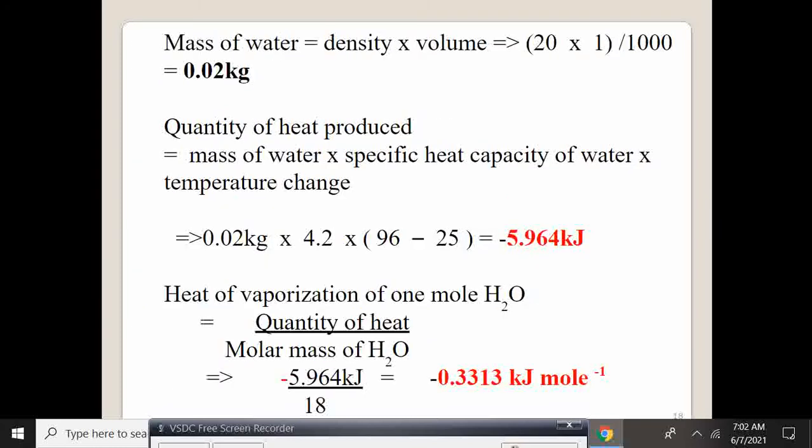So we start by getting the mass of water, that is the density of water times the volume. We measure 20 cubic centimeters of water and the density of water is 1 gram per cubic centimeter. That gives us 0.02 kilograms.